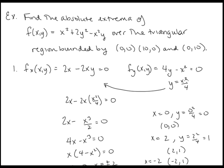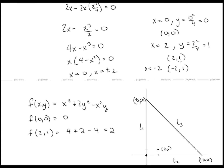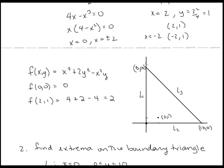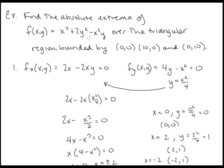Let's look at another example: find the absolute extrema of f(x, y) = x² + 2y² − x²y over the triangular region bounded by (0, 0), (10, 0), and (0, 10). The domain is this triangular region, and we want to find absolute extrema over that domain.